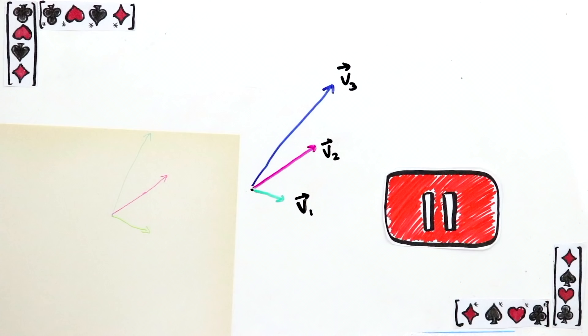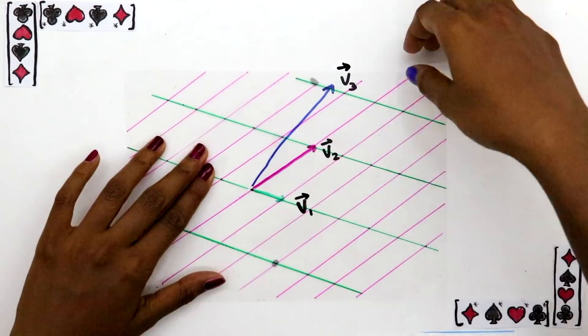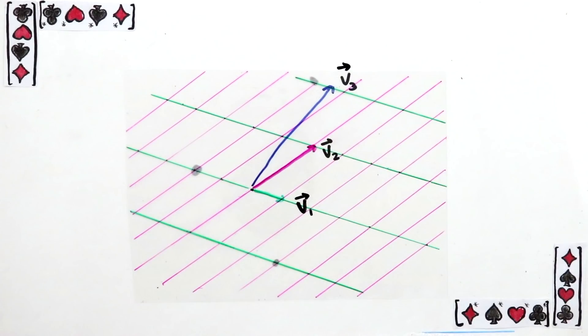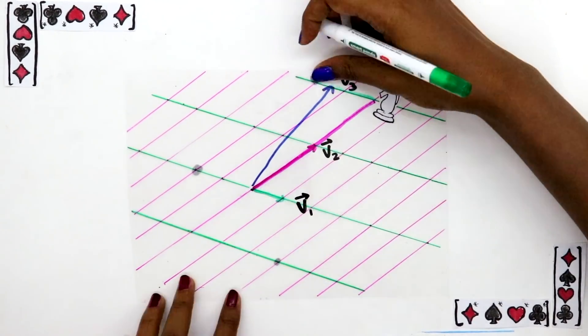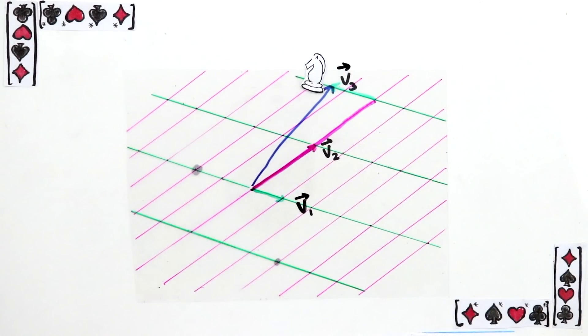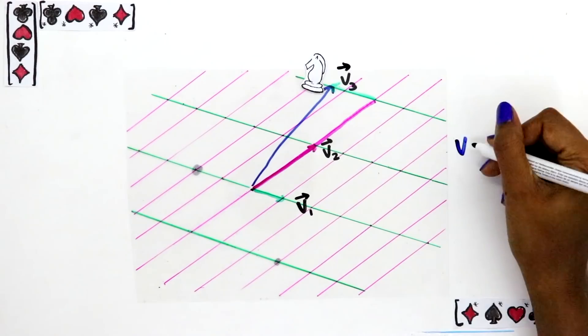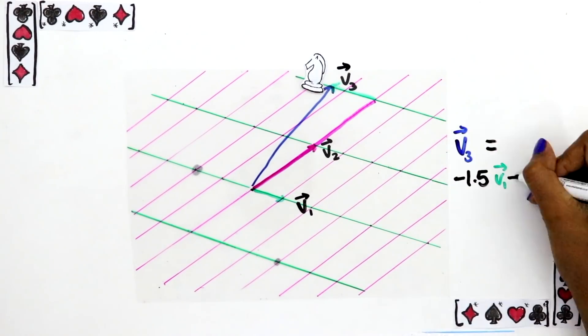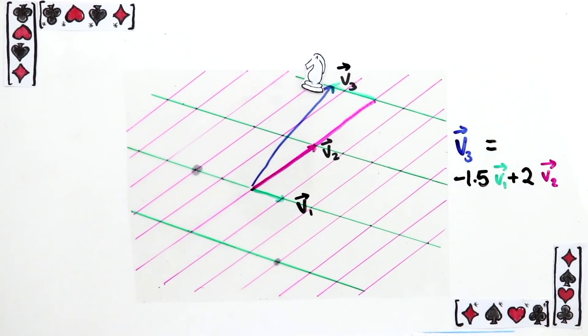Assuming that you gave that a go, here's how to do it for any example. Draw a grid like this with your two vectors. This says you need to go two of these lengths to get here, and minus 1.5 to get here. So in my case, the new vector is minus 1.5 v1, plus 2 v2.